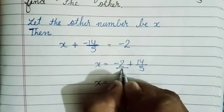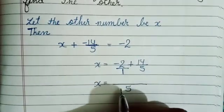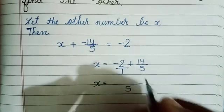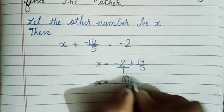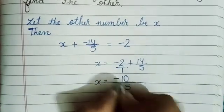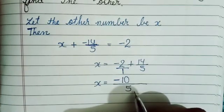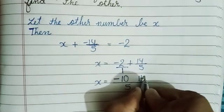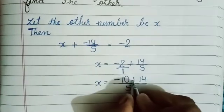Now we can write minus 2 as minus 2 upon 1. 1 into 5 is 5, and 5 into 2 is 10. So minus 10. 5 divided by 5 is 1, 1 into 14 is 14, sign plus.